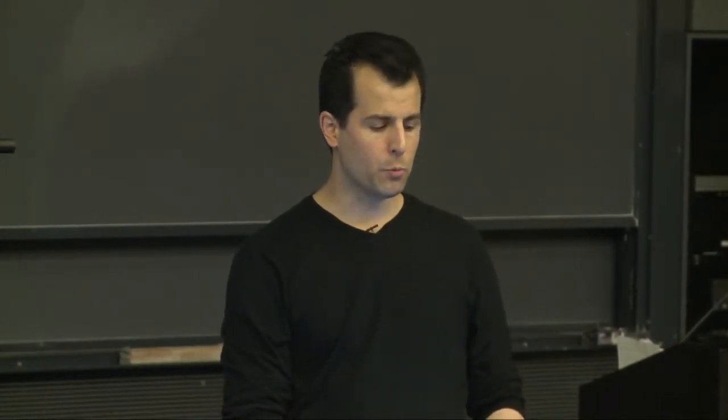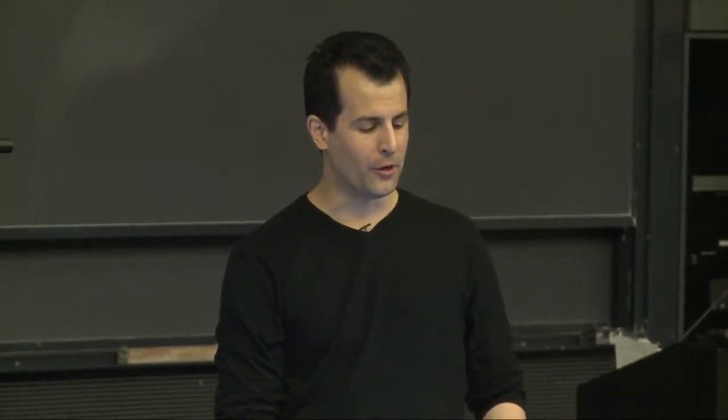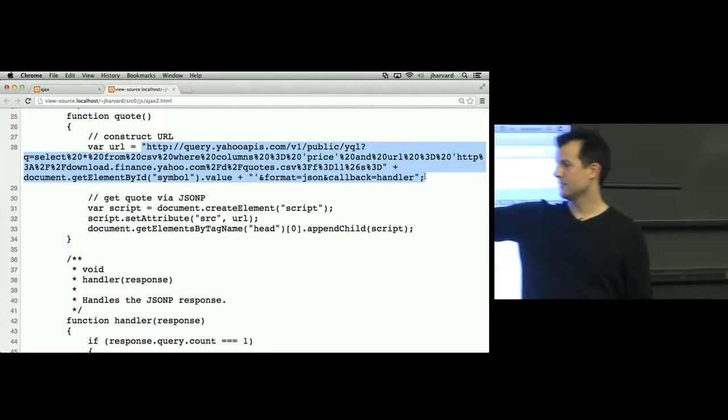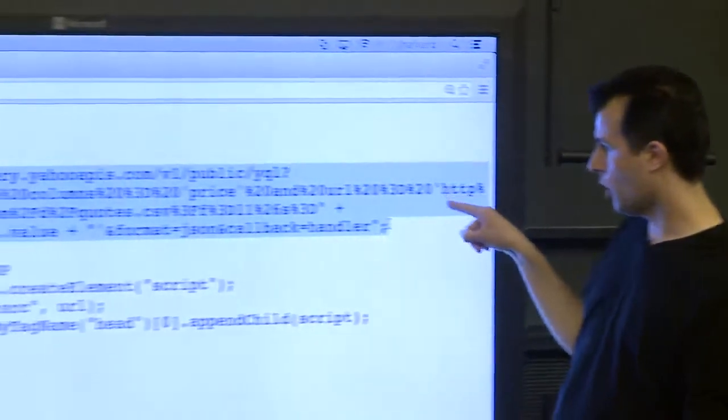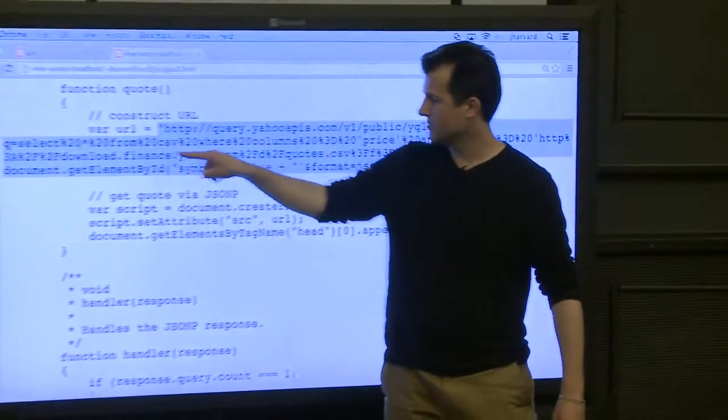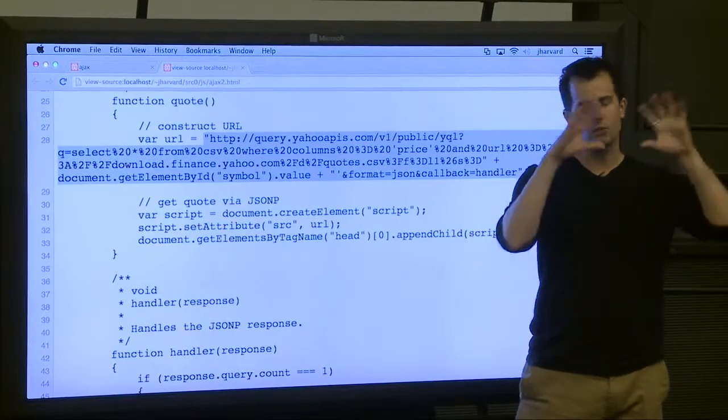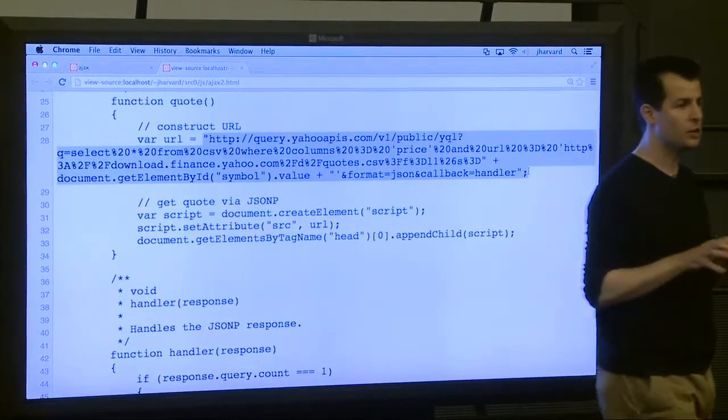There is a service that is coincidentally made by Yahoo called YQL, Yahoo Query Language, that simply allows you to query websites like Yahoo Finance, Facebook, Google, Twitter, any website on the internet. And if they expose their data as JSON data or XML data, Yahoo Query Language will allow you to fetch that data and it will wrap it in this modified version of JSON called padded JSON so that you can integrate the results into your own page.